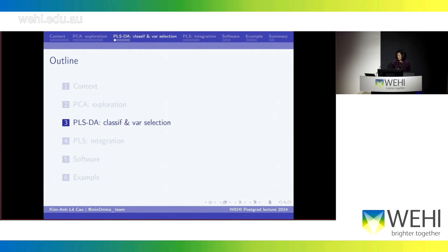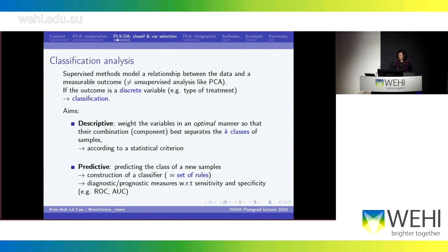The first method to go through is PLS discriminant analysis, used for classification and variable selection. Classification analysis uses a supervised method to understand the relationship between data and a measured outcome. This is very different from PCA — in PCA you just plug in your dataset without specifying anything about patients being sick or not, whereas here you explicitly state you're interested in discriminating cases and controls.